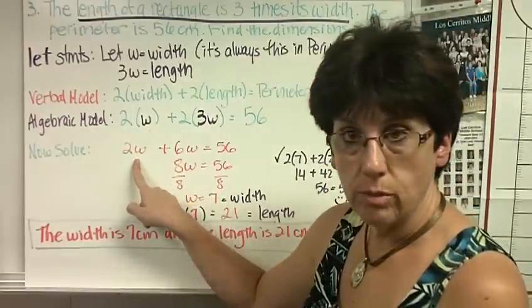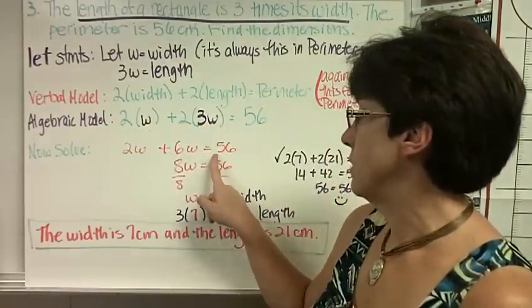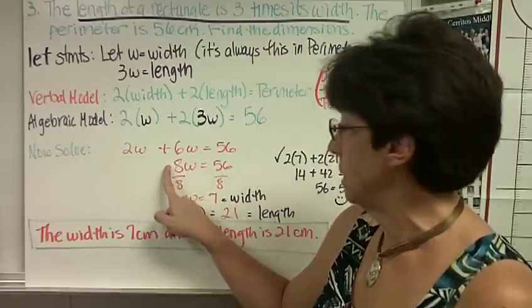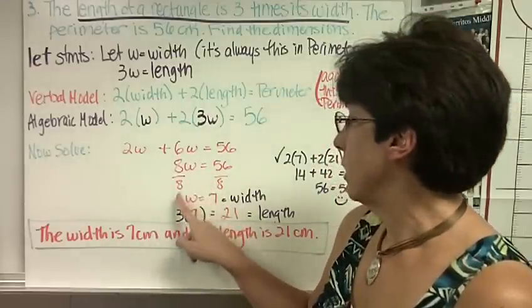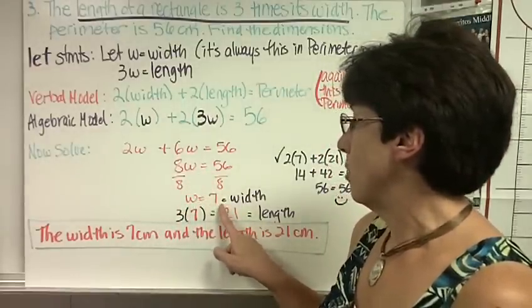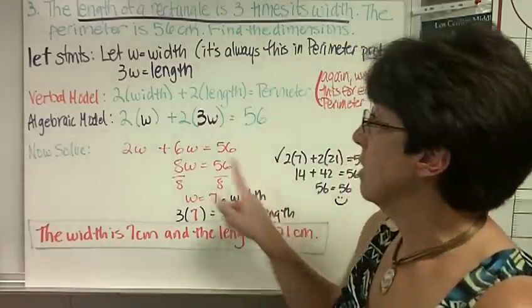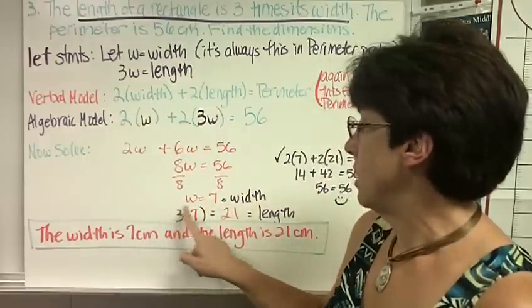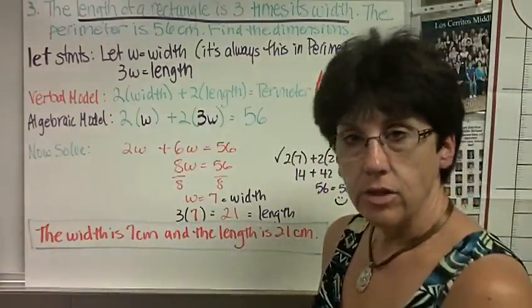2 times W is 2W. 2 times 3W is 6W equals 56. Combine like terms. 2 plus 6 is 8. 8W equals 56. Divide both sides by 8. We get W equals 7. Remember, W is the width. How do I find the length? The length is 3 times W. So 3 times 7 equals 21, and that's the length.